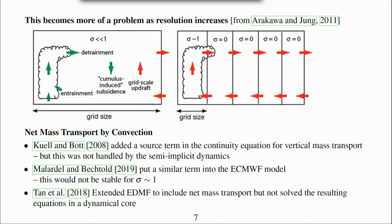Qwell and Bott added a source term in the continuity equation for vertical mass transport due to convection. However this was not handled by the semi-implicit dynamics and I imagine that this was not stable for large σ or for large time steps.